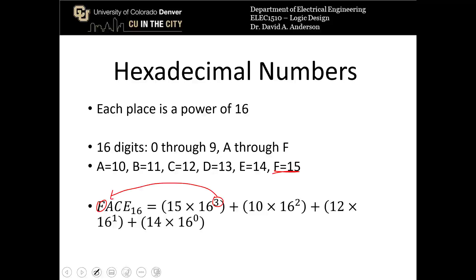Plus 10, A is 10, times 16 squared, plus C here is 12, 12 times 16 to the first power, plus E, which is 14, times 16 to the 0.